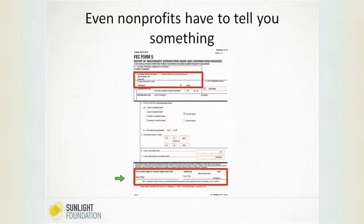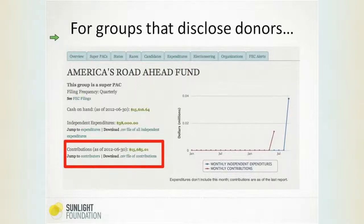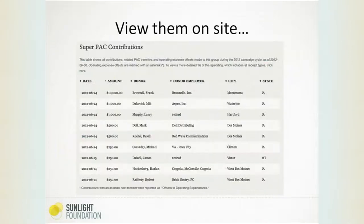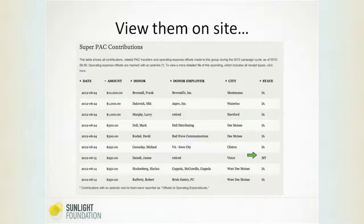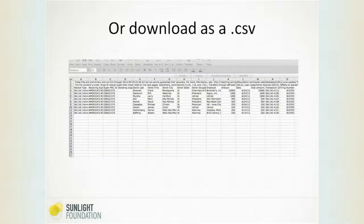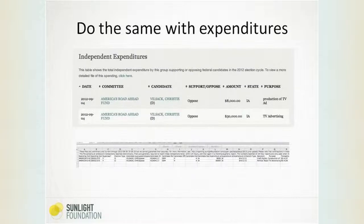Even those shadowy outside groups do have to tell you something — they have to give you an address you can Google. A lot of times some of these nonprofits are associated with other nonprofits or are in a place where there's a labor union, law firm, or something similar. They'll also give you the name of the person filling out the form. For the groups that do disclose their donors, these boxes on the Super PAC pages are really handy — you can click and jump down to a list of donors to see who's giving. For ones with tons of donors, you can just download it as a CSV and open it in Microsoft Excel, then crunch the numbers and do some standardization to see who's supporting the organization. You can do exactly the same thing with the expenditures.